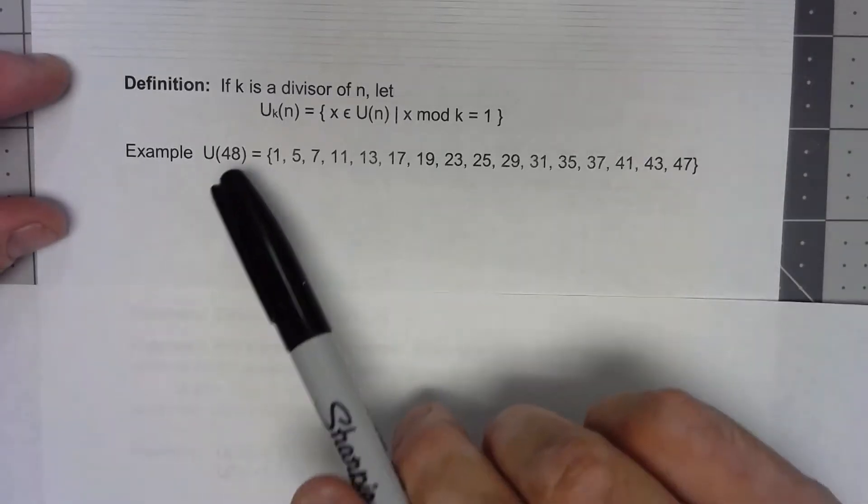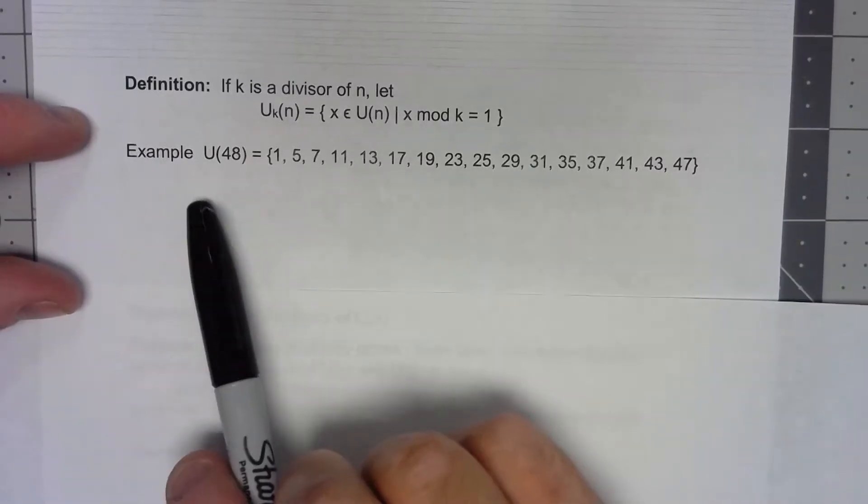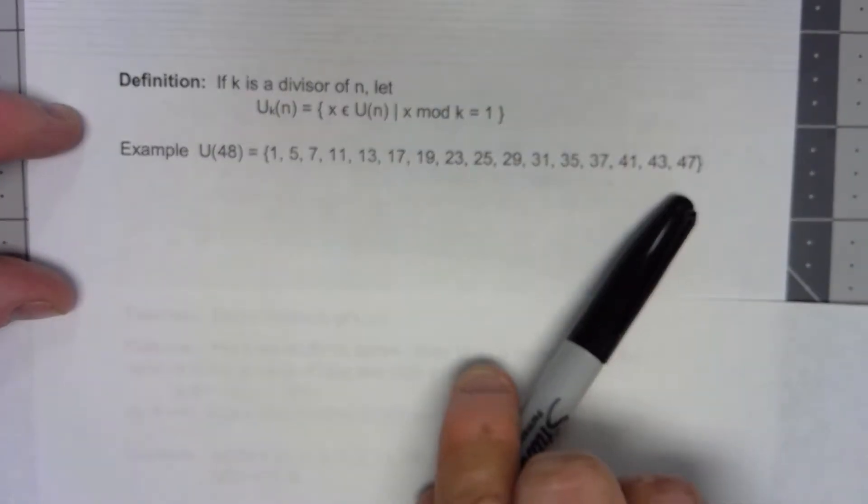So we're going to say U sub k of n is the set of all elements in that U(n) such that when we take the element mod k we get 1. So for an example here we've got U(48) equal to all these things.